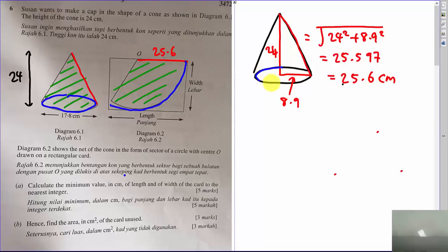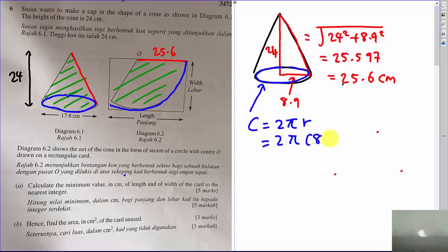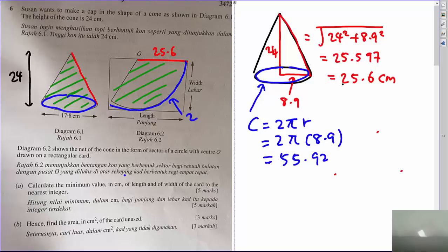The second thing is to find the circumference of the base circle, because this will be the arc length of my sector. The circumference equals 2πr, so it's 2 × π × 8.9, which gives 55.92. That means my arc length is 55.92.